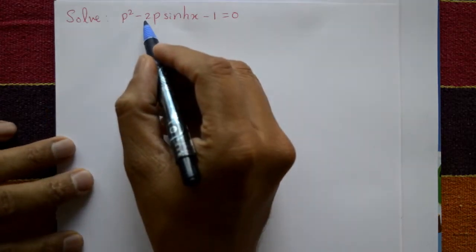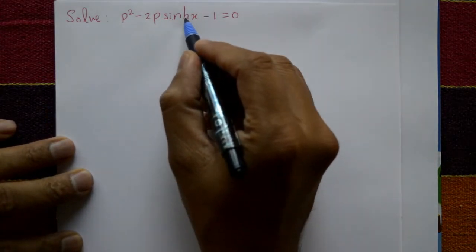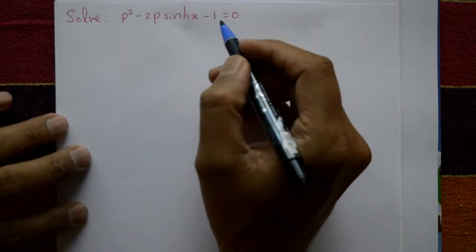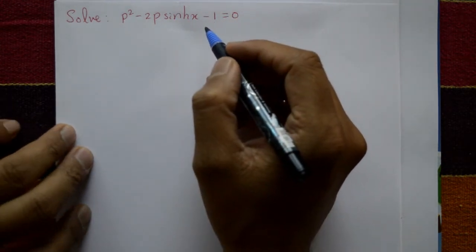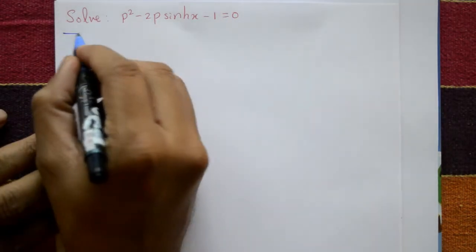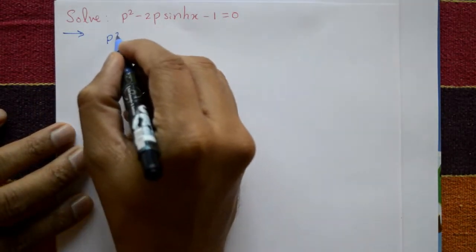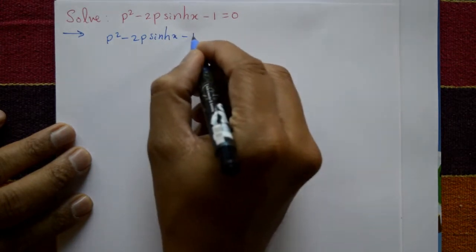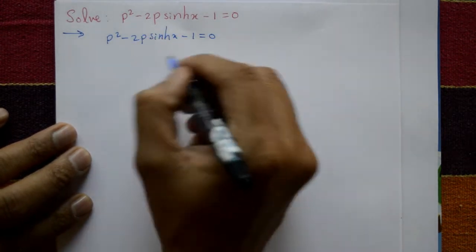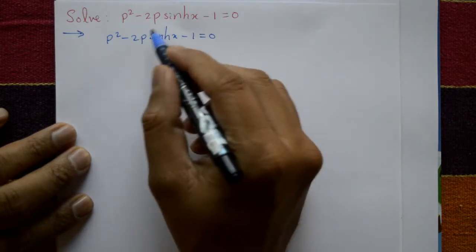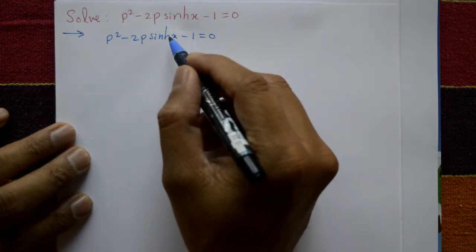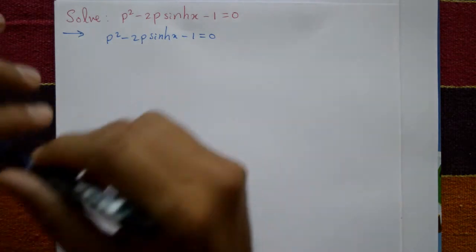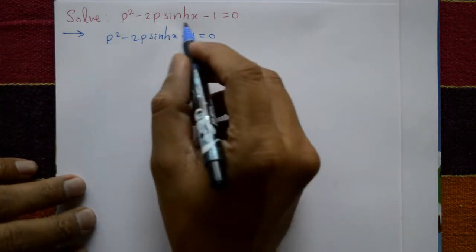Solve p squared minus 2p·sinh(x) minus 1 equal to 0, find the complete general solution. The given equation is p² - 2p·sinh(x) - 1 = 0. First, check if factorization is possible — it is not possible, and taking common factors is also not possible.